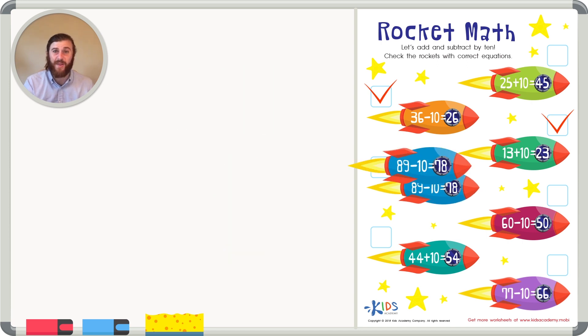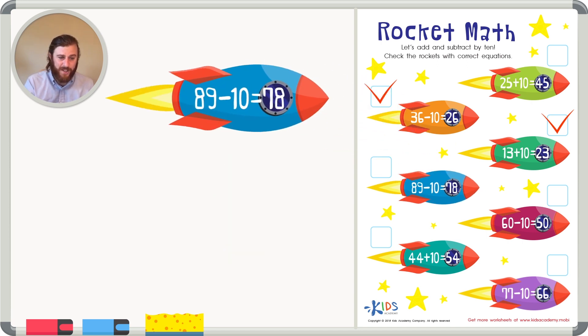The next rocket, the blue rocket, has a number sentence that says 89 minus 10, and it has a difference of 78. Hmm, I start to notice something. 9 minus 0 is going to be 9 because we're taking nothing away from it. And 8 minus 1 is 7. So we have a difference of 79.